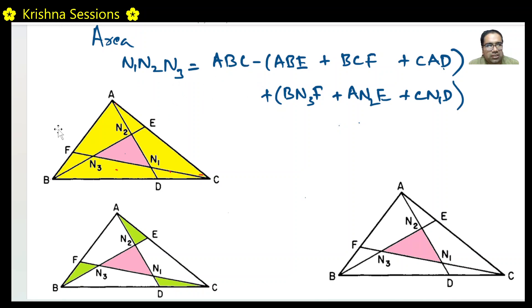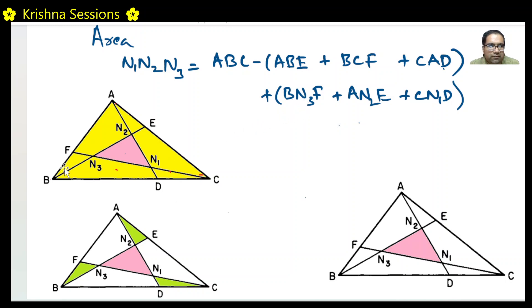So the formula is: Area(N1N2N3) = Area(ABC) − Area(ABE) − Area(BCF) − Area(CAD) + Area(BN3F) + Area(AN2E) + Area(CN1D). We have written this out explicitly. Now let us calculate the areas of each of these triangles using the given ratios.